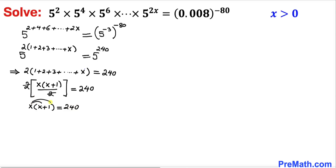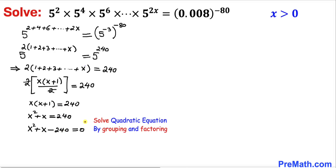Let's distribute: x squared plus x equals 240. Moving 240 to the left hand side gives us a quadratic equation, which we'll solve by grouping and factoring. We can rewrite x as 16x minus 15x, because 240 equals 15 times 16.